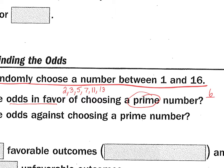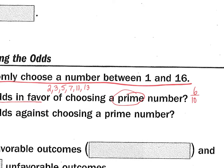Over how many are unfavorable? Basically, you just take those six out of how many there are total. How many numbers are there from one to 16? Well, there's 16, right? And 16 minus 6 is 10. So it's 6 to 10, which reduces to 3 to 5. So the odds in favor of choosing a prime number are 3 to 5.